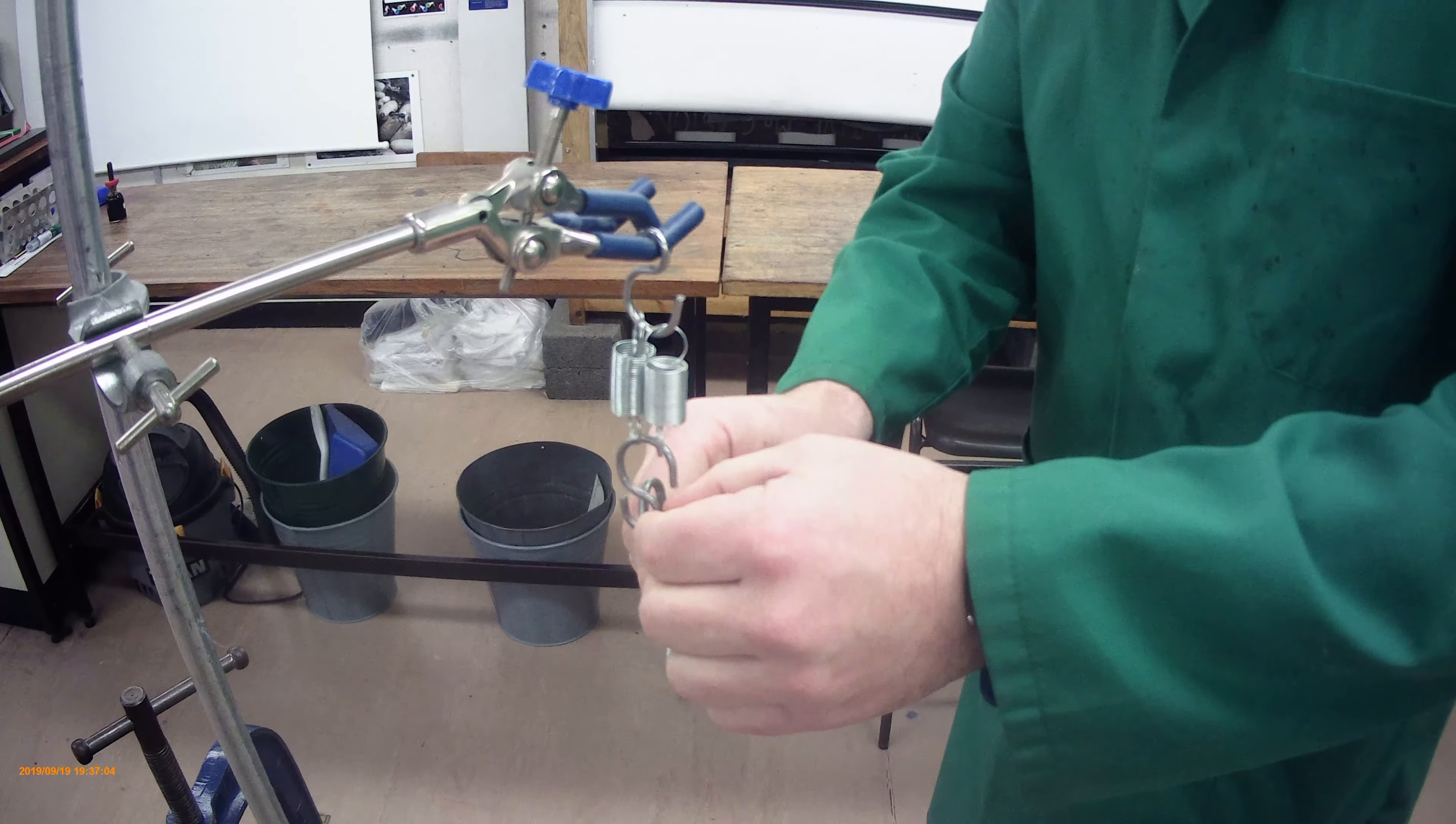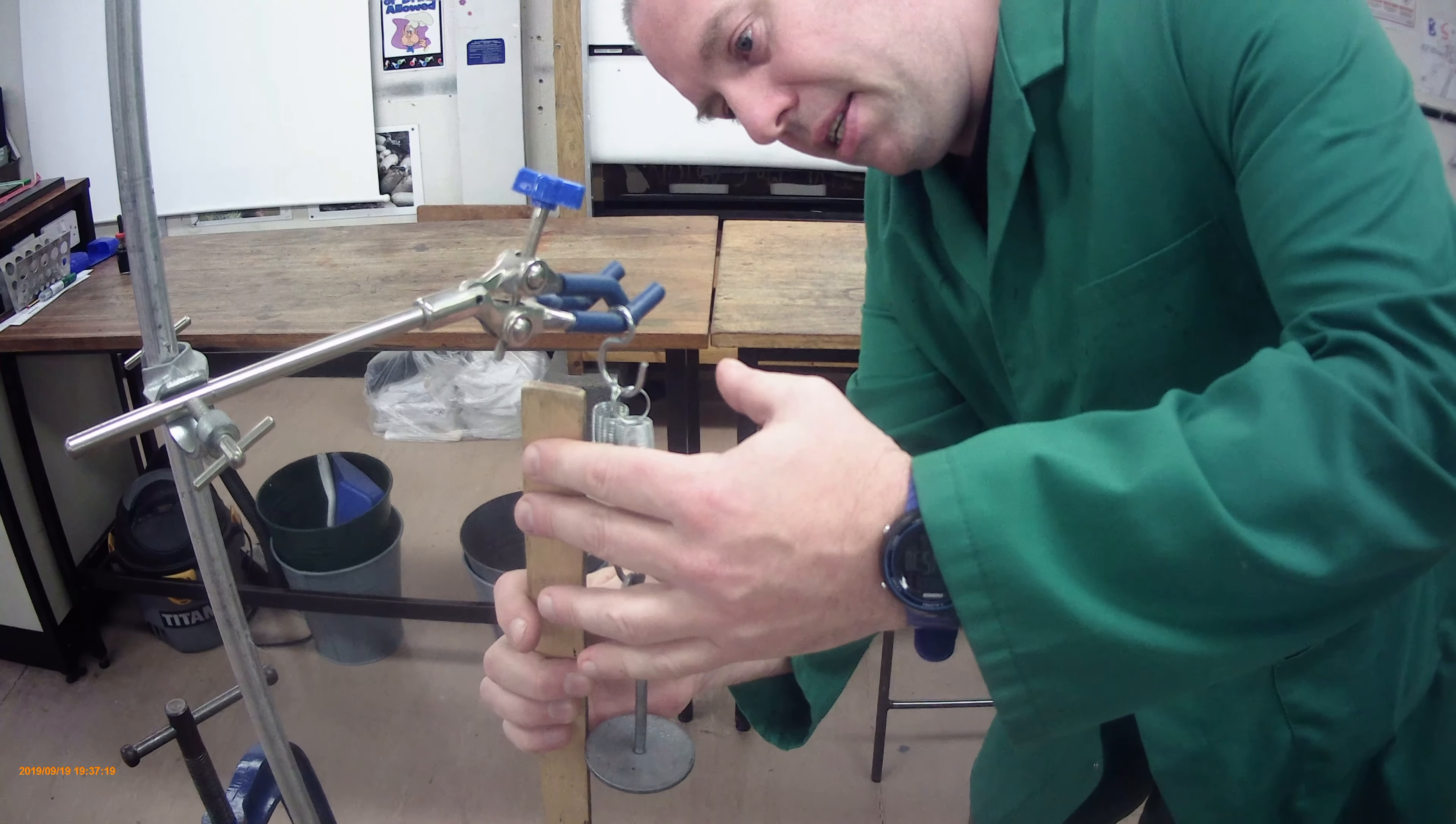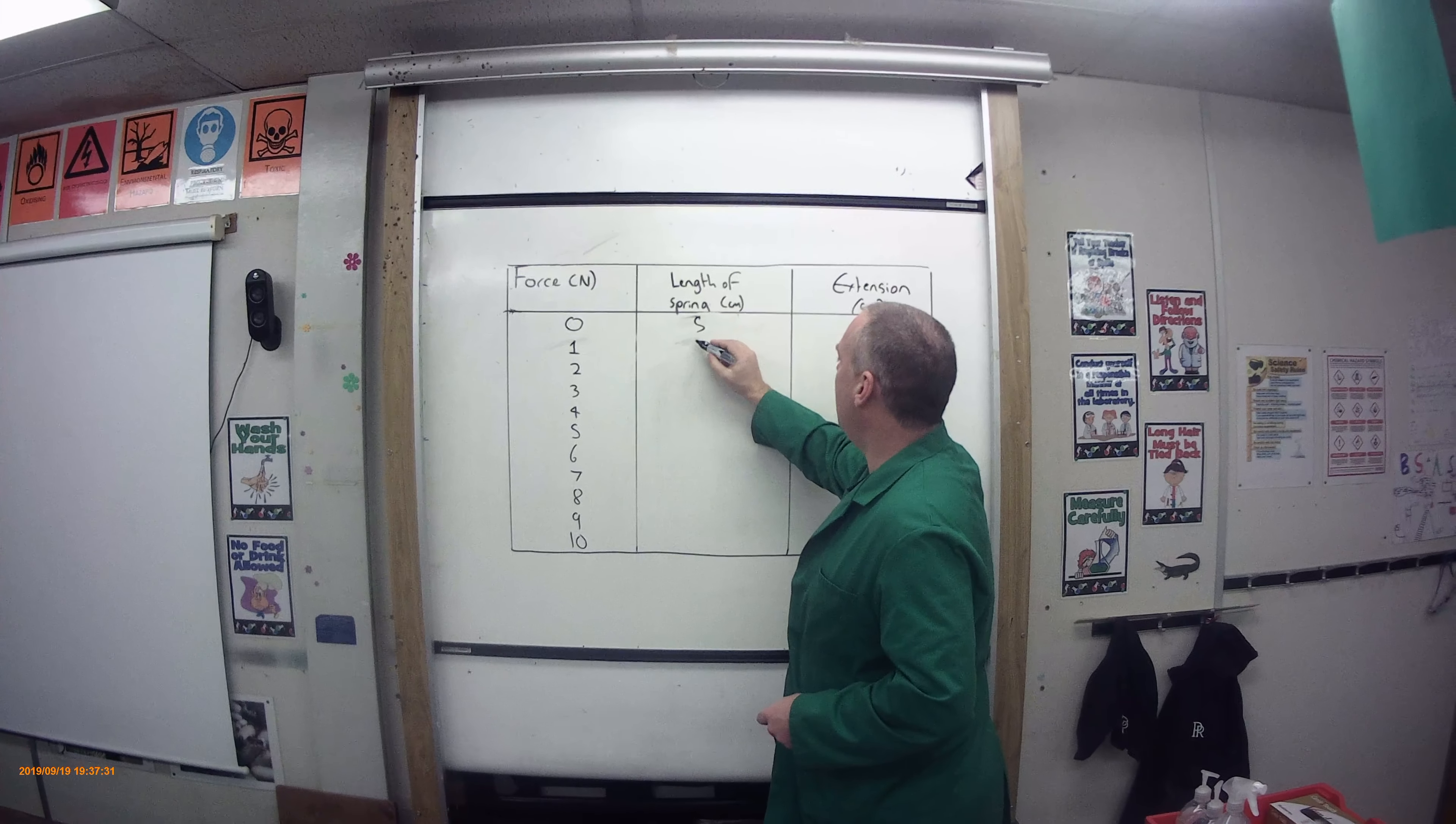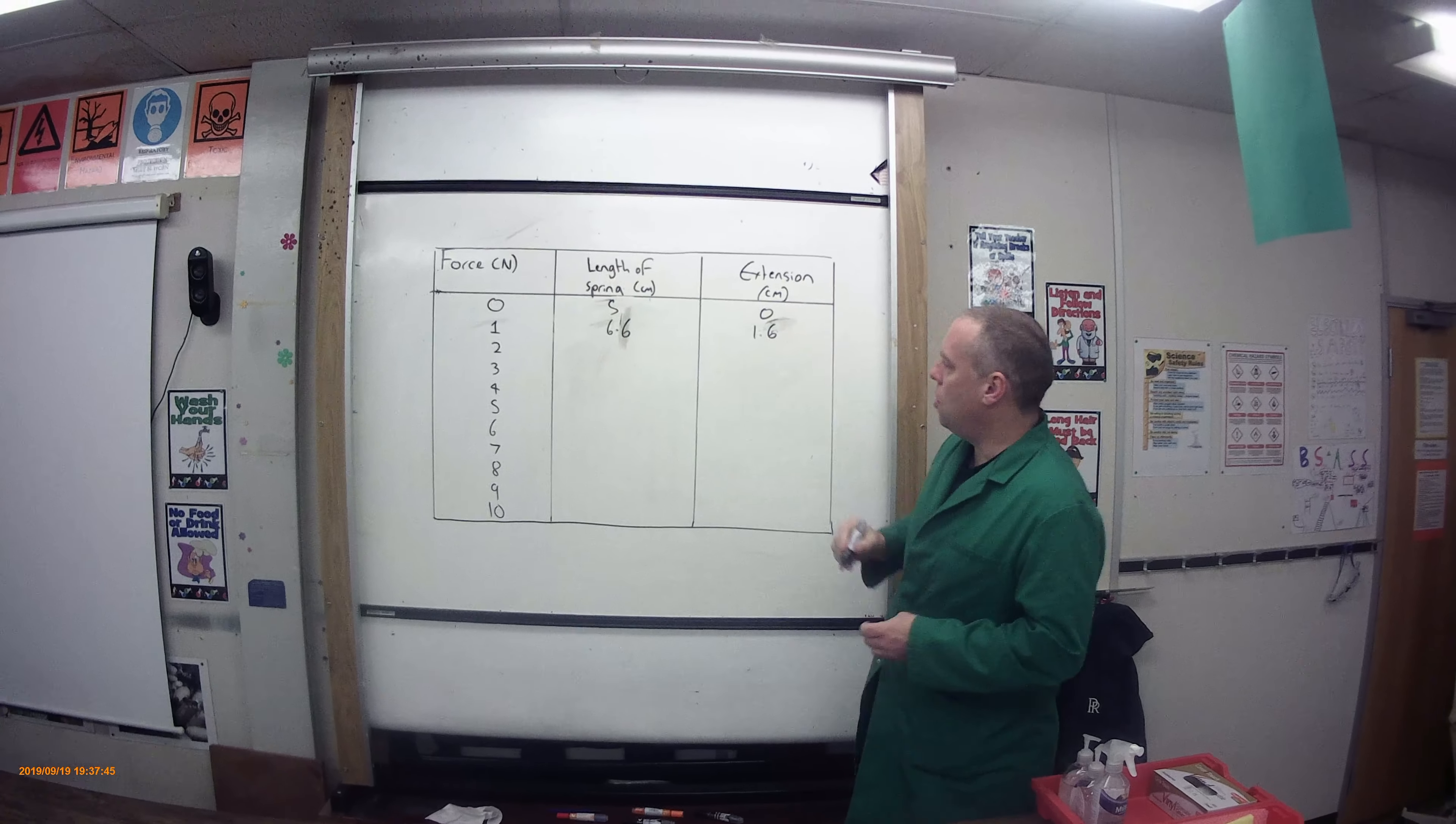I'm going to put one newton onto here. Now you might have observed that that hasn't extended by nearly as much. We'll put this onto here. There we go. That is 6.6 centimeters. So for this example, we've got five and we had 6.6. So that is an extension of 1.6 centimeters.